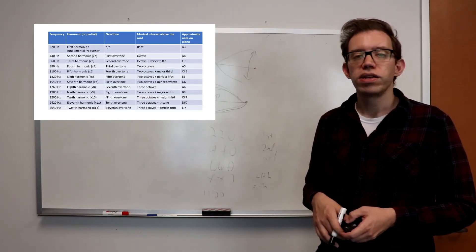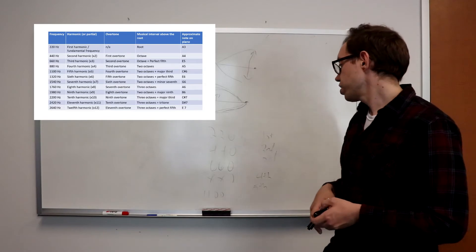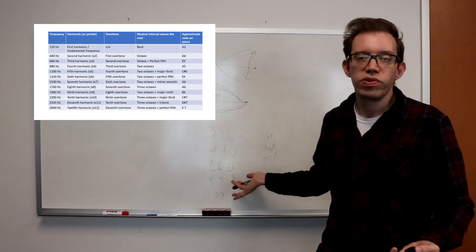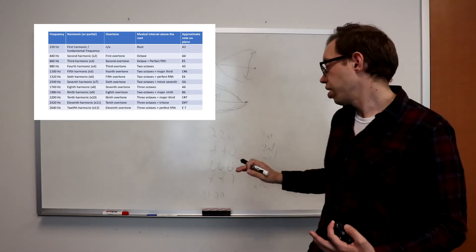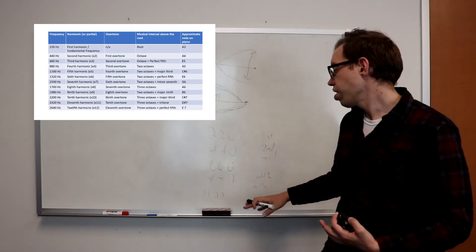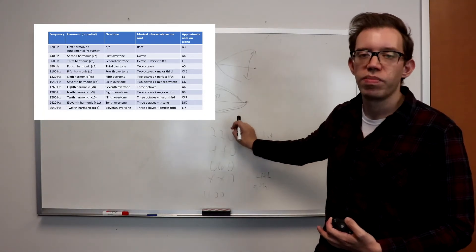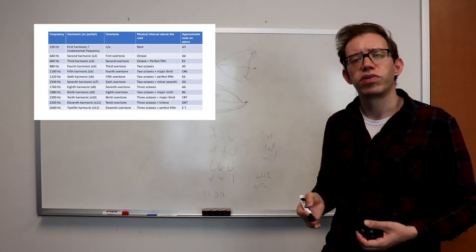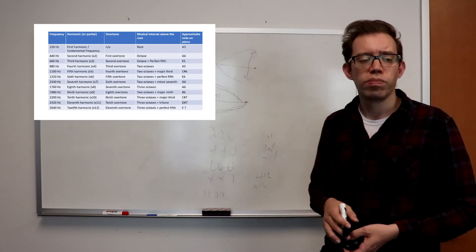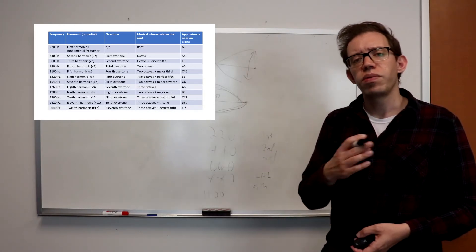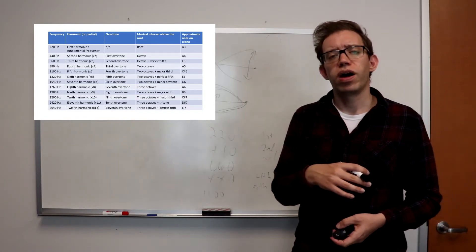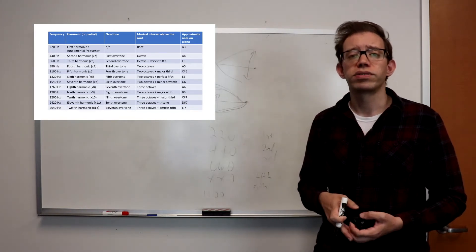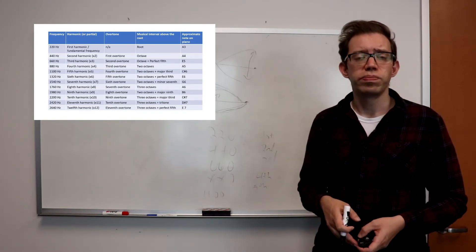Because to get an octave you have to keep doubling, but we're not doubling — we're just adding the amount of the fundamental frequency. So all of these pitches form the harmonic series. Let me go show you what the harmonic series looks like on a piano.